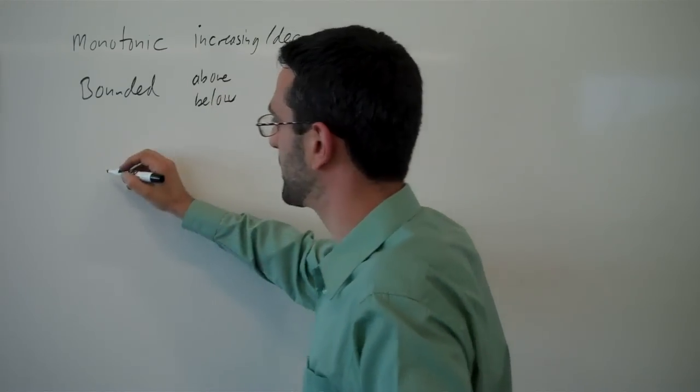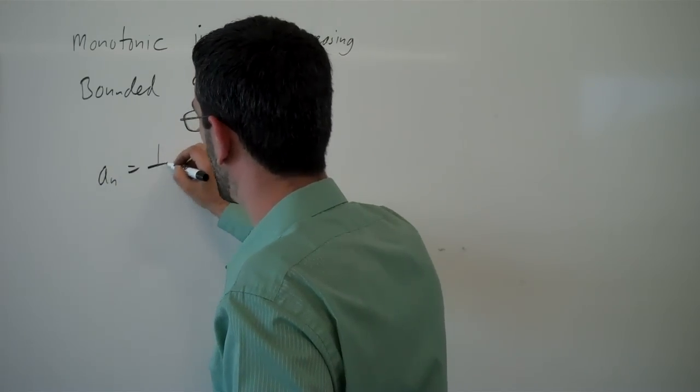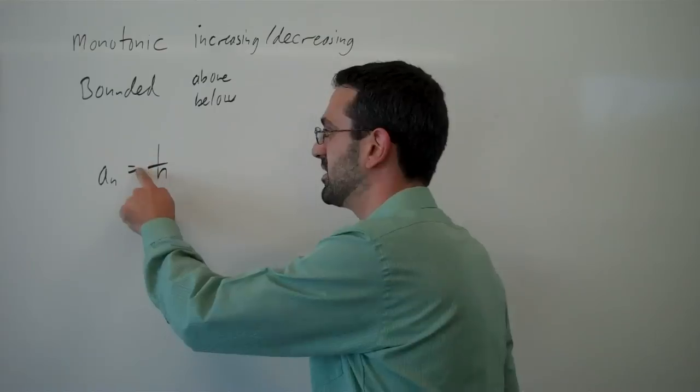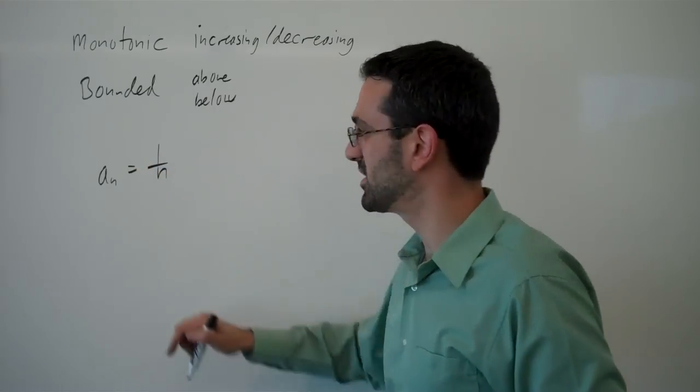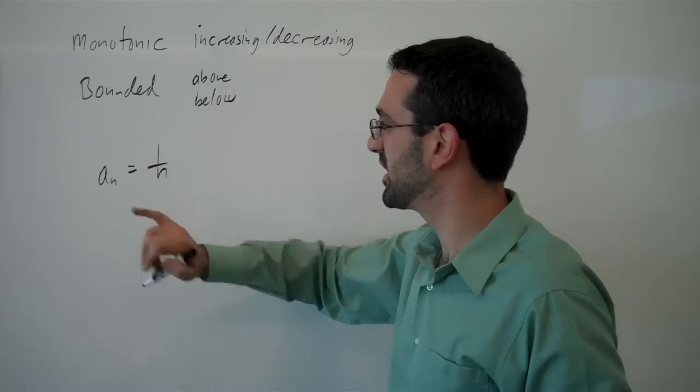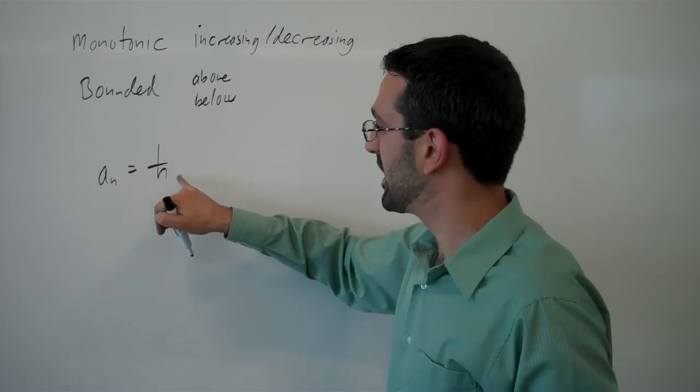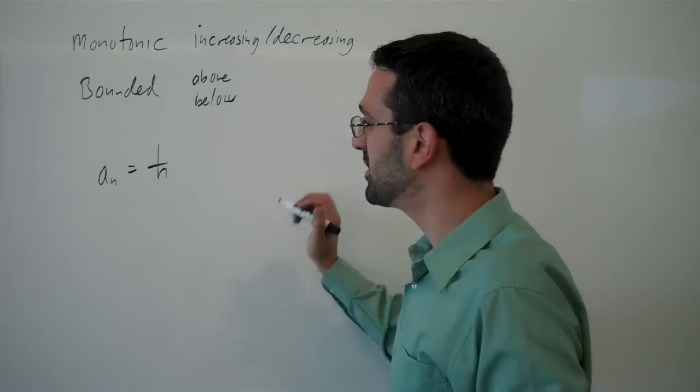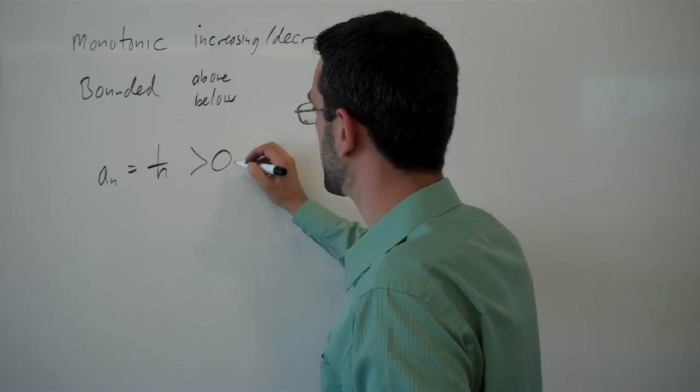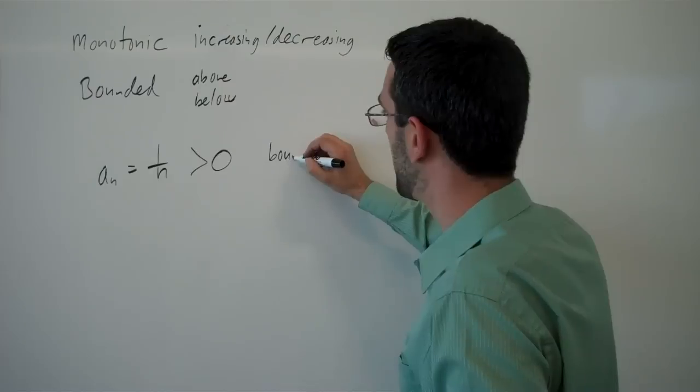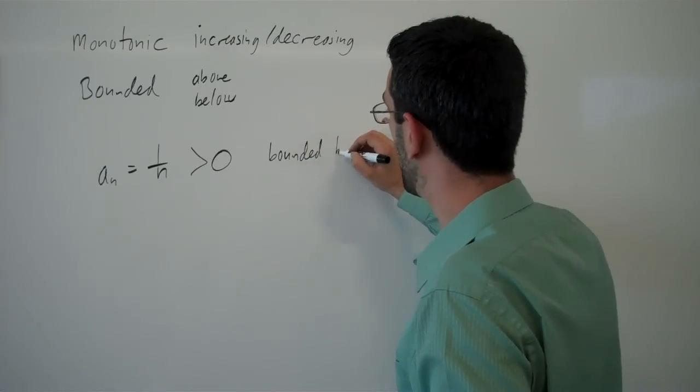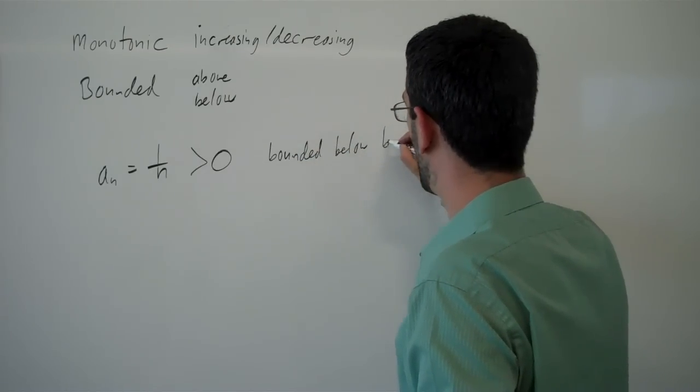So for example, again, a_n equals 1 over n. Notice that since n is always a whole number, since n is always positive, 1 over n will always be positive. This is always greater than 0. And so this is bounded below by 0.